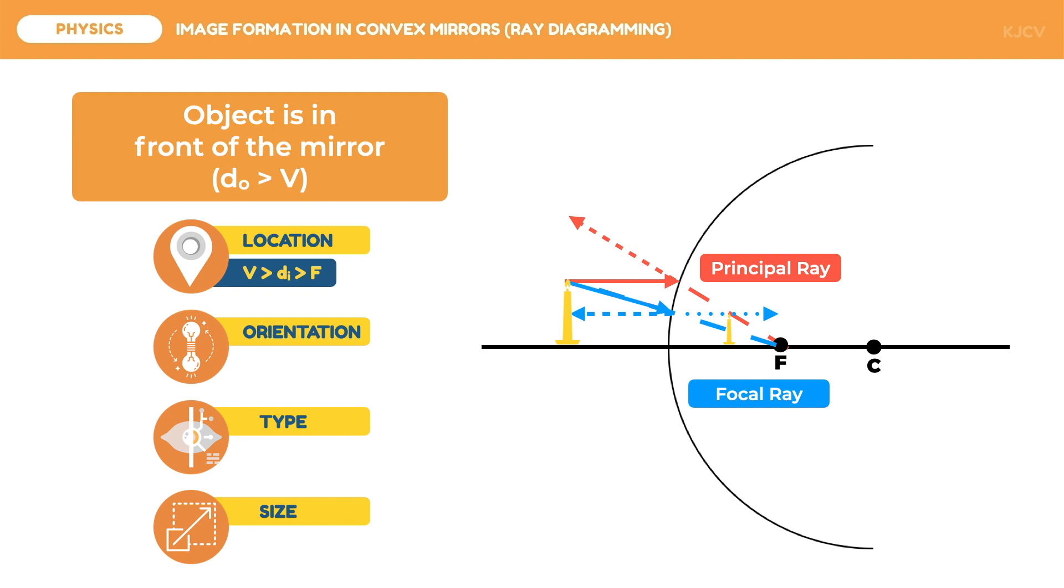For the orientation, we can see that the intersection is formed above the principal axis. This means that it is upright. Automatically, its image type is virtual. Another explanation for this is that the rays did not intersect in front of the mirror to create the image. Lastly, for the size, we can see that the image is smaller than the object. This means that the image is reduced.